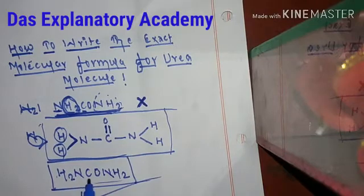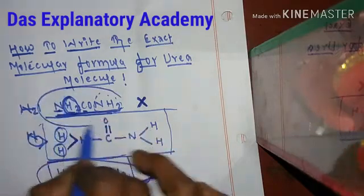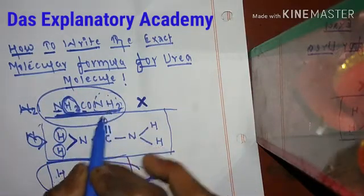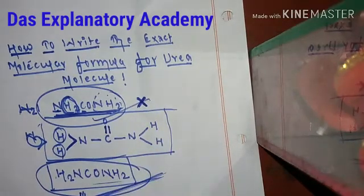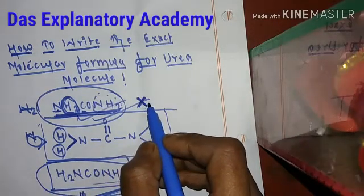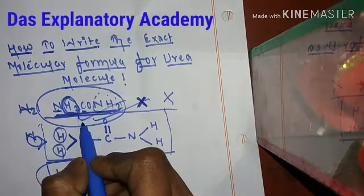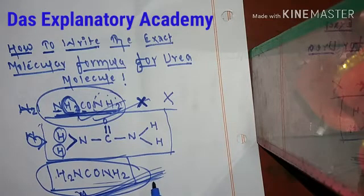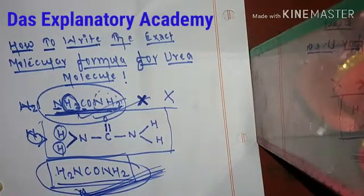So the exact molecular formula of the urea molecule is H2N–CO–NH2. Though the formula NH2CONH2 is still seen in most instances, it does not have scientific morality or scientific evidence, and that is why we do not consider it the correct one. The right formula for the urea molecule is H2NCONH2.